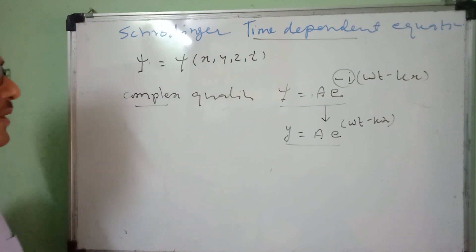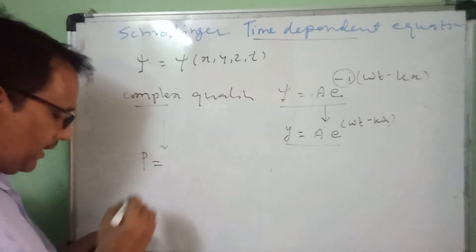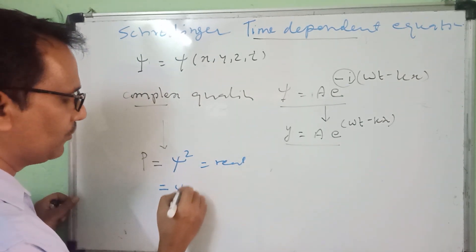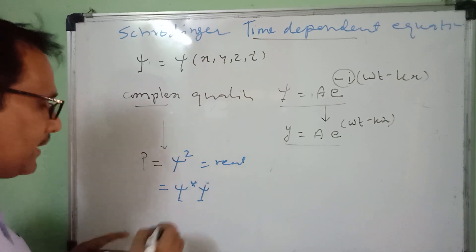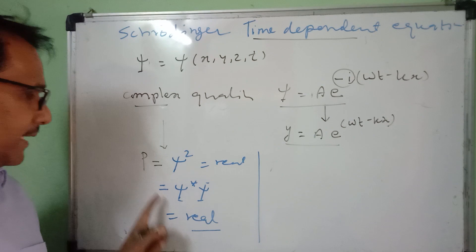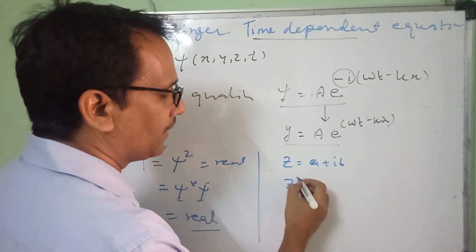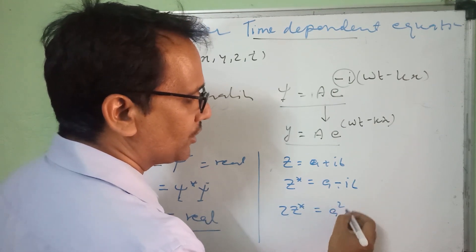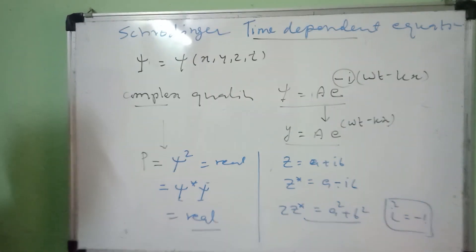There is no individual physical significance of psi itself. If you want to interpret the physics, we convert it in terms of probability p, which is proportional to psi squared. This psi squared is actually real because it equals psi-star multiplied by psi, where psi-star is the complex conjugate. For example, if z = a + ib, then z·z* = a² + b², which is real. This is the property of complex numbers.